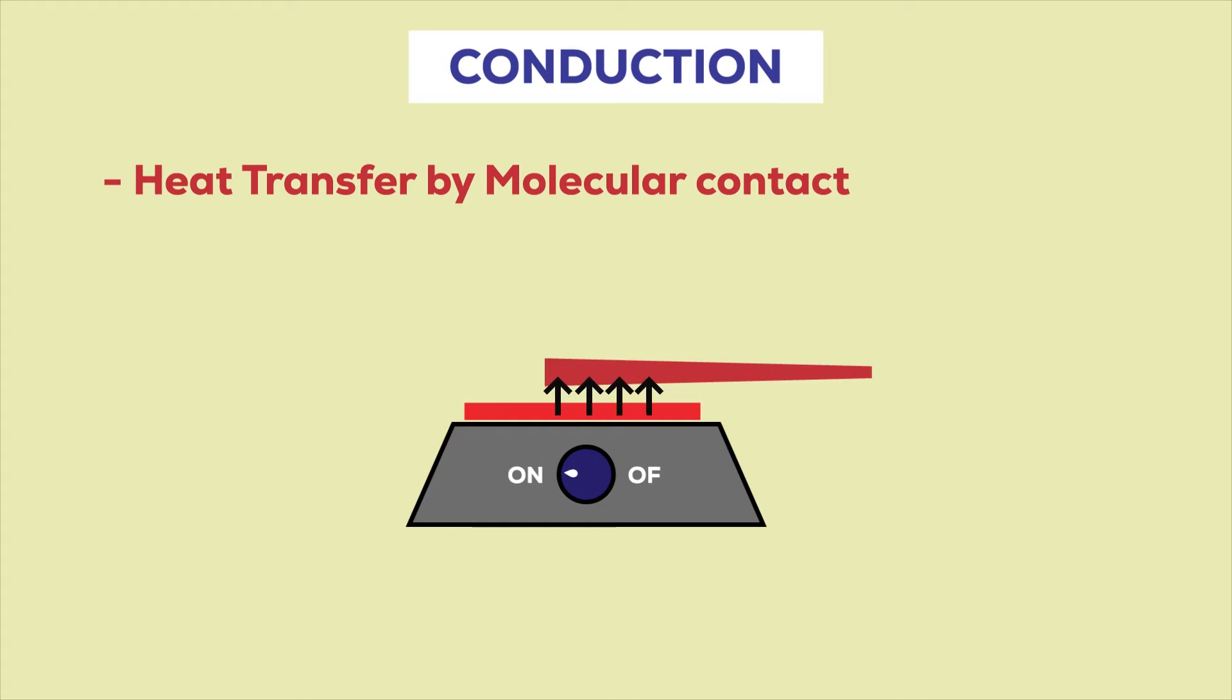Heat transfer through the process of conduction occurs in substances which are in direct contact with each other. It generally takes place in solids. Here the heat from the stove is transferred to the metal rod, and then heat transfer takes place from one molecule to another molecule as a result of the vibratory motion of the molecules.